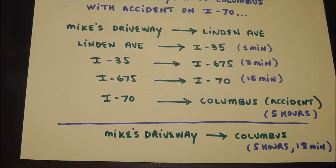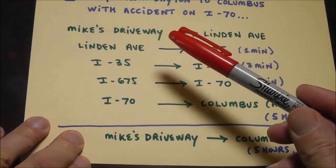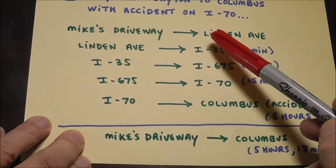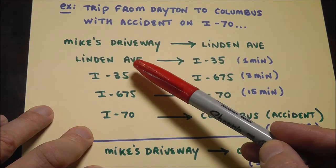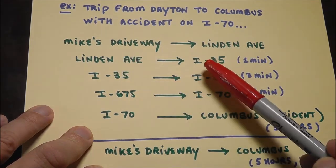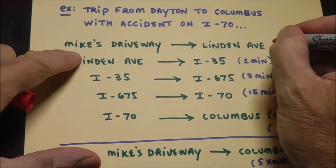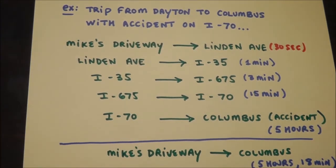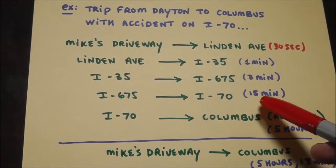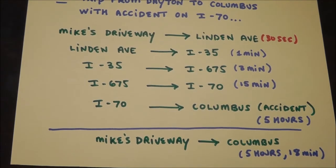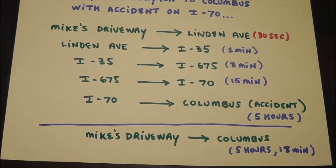The beginning stage is Mike's driveway, I start there and then I end up in Columbus and it takes five hours and 18 minutes. I go from Mike's driveway to Linden Ave, that takes one minute. Linden Ave to I-35 takes a minute, then I-35 to 675 takes three minutes, and then 675 takes 15 minutes. But then I get stuck on 70 sitting in standstill traffic because there's an accident, and the whole process takes five hours and 18 minutes.